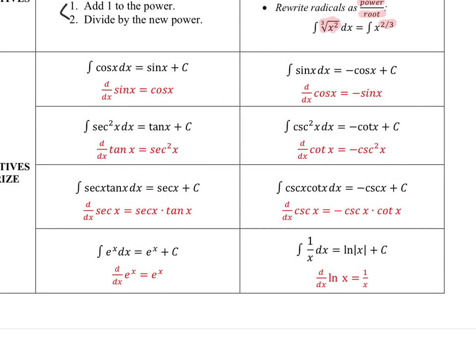The next six are related to trig functions, with derivatives written below each one. Derivative of sine x is cosine x; therefore, the antiderivative of cosine x dx equals sine x plus c. The bottom two cover exponentials and logs. The derivative of e to the x is e to the x; therefore, the antiderivative of e to the x is also e to the x. Since the derivative of the natural log is 1 over x, the antiderivative of 1 over x is the natural log of the absolute value of x — the absolute value ensures the argument stays positive.